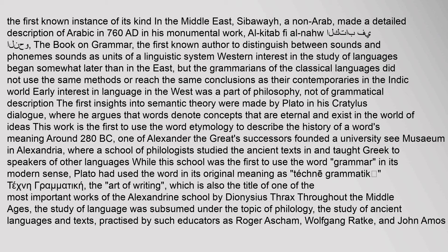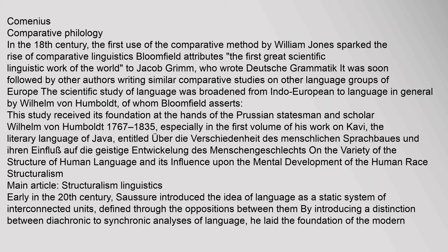Western interest in the study of languages began somewhat later than in the East. Early interest in language in the West was part of philosophy, not grammatical description. The first insights into semantic theory were made by Plato in his Cratylus dialogue, where he argues that words denote concepts that are eternal. Around 280 BC, one of Alexander the Great's successors founded a university — the Mouseion in Alexandria — where a school of philologists studied ancient texts and taught Greek to speakers of other languages. Throughout the Middle Ages, the study of language was subsumed under philology, practiced by educators such as Roger Ascham, Wolfgang Ratke, and John Amos Comenius.